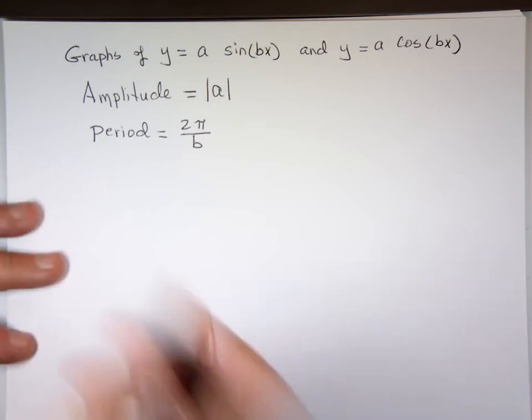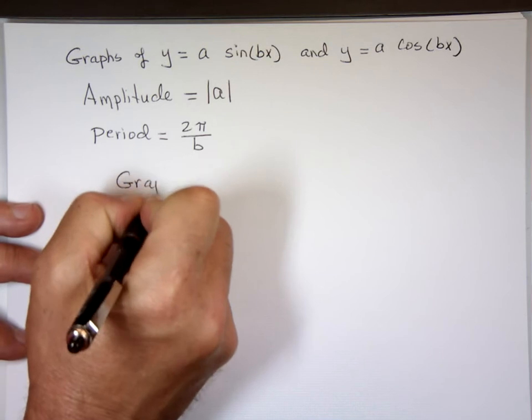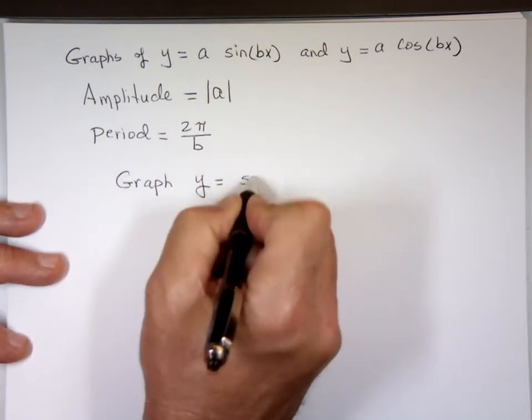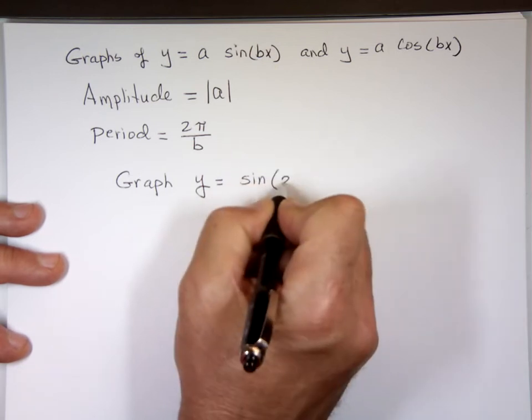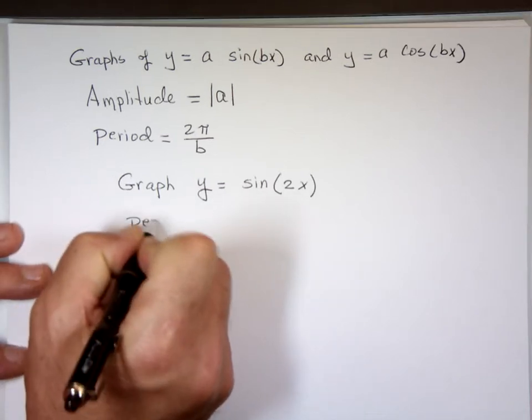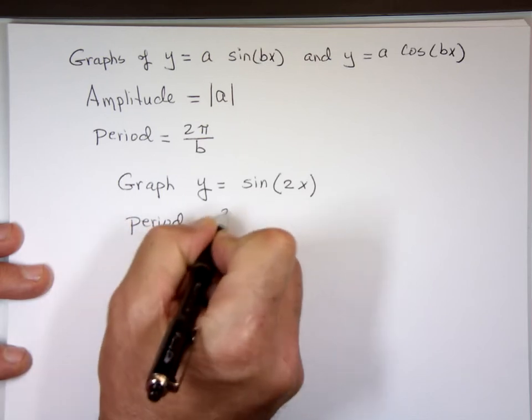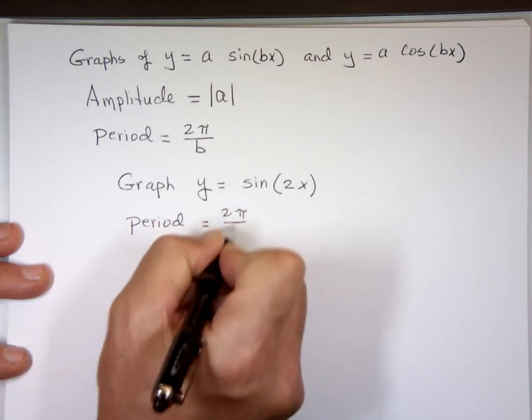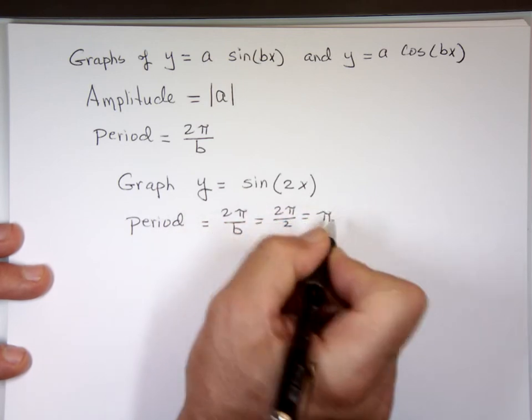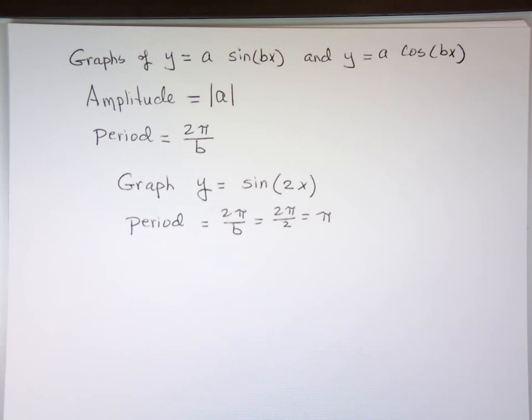So when I say, can you graph Y equals sine 2X? My period here is going to be 2 pi divided by B, and B happens to be 2, and that's pi. You know how before the sine X, it took 2 pi to complete one full cycle? Now it's only going to take 1 pi.